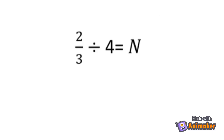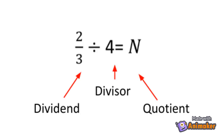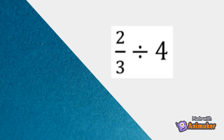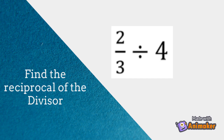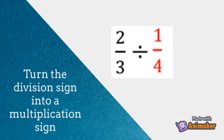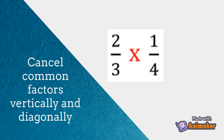How do we divide fractions without using illustrations or drawings? Let's recall first the parts of a division sentence: 2 thirds in our example is the dividend, 4 is the divisor, and n is the quotient. To divide a fraction by a whole number, first find the reciprocal of the divisor. Since the divisor is a whole number, you have to change it to a fraction with a denominator of 1, then flip it over. Next, turn the division sign into a multiplication sign. Cancel common factors vertically and diagonally, if possible.